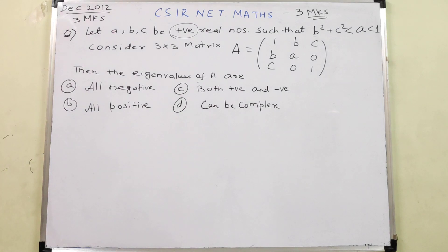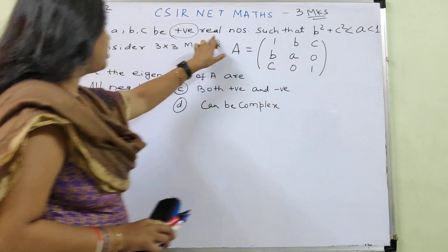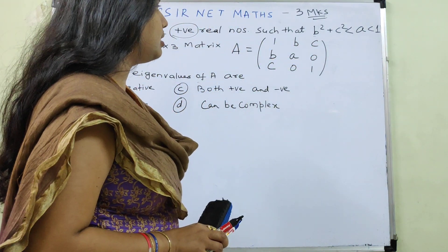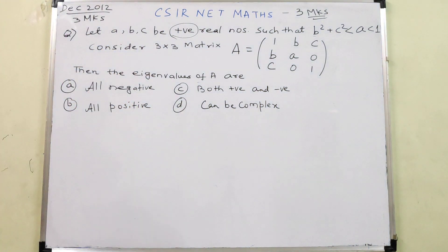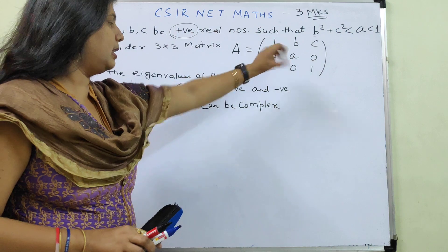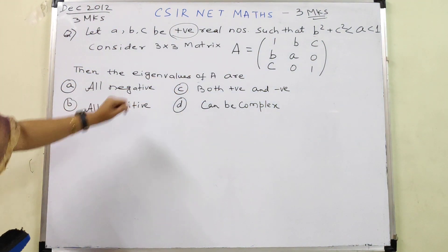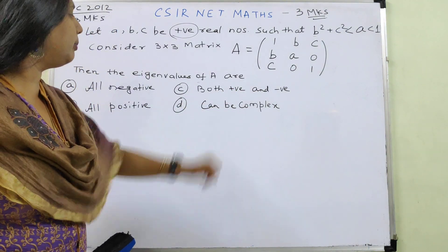The question I am going to discuss now is taken from December 2012, worth 3 marks, from the CSIR NET examination mathematics paper. Let A, B, C be positive real numbers such that B squared plus C squared is less than A, and A is less than 1. Consider a 3×3 matrix A with the given entries. Then the eigenvalues of A are: all negative, both positive and negative, all positive, or can be complex.